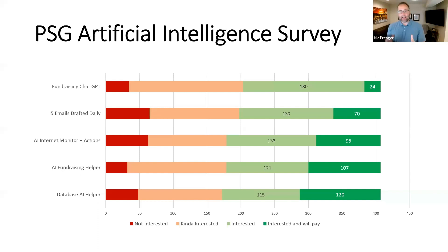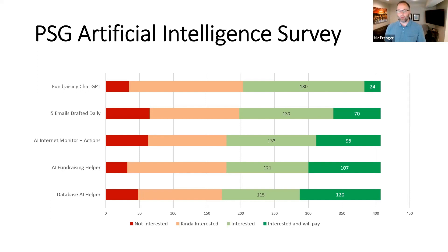We actually did a survey and many of you participated. We were brainstorming how we can use AI — a fundraising ChatGPT, drafting emails, having AI monitor the internet for donor actions like getting married or buying a house, an AI fundraising or database helper. The results were split right down the middle between people who were very interested and those who were not really into it for their organization.